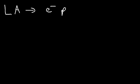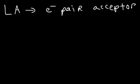Now let's go over the Lewis acid and Lewis base definition. A Lewis acid is an electron pair acceptor. A Lewis base is an electron pair donor.